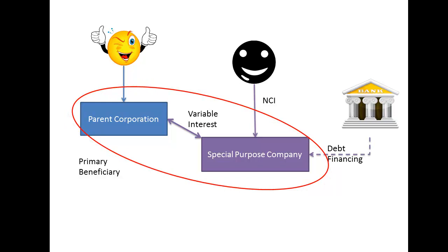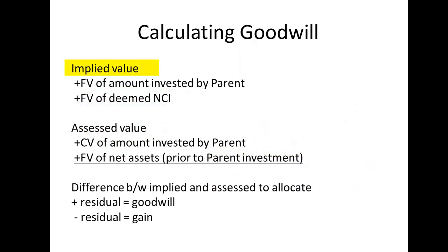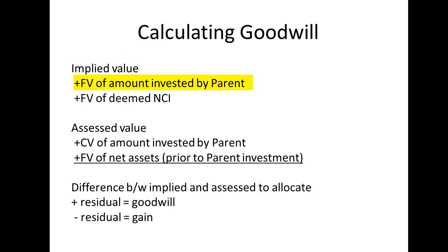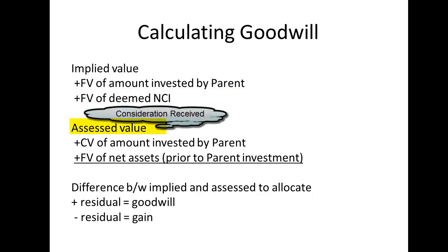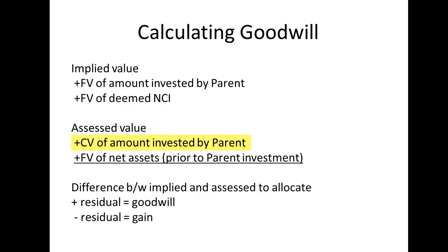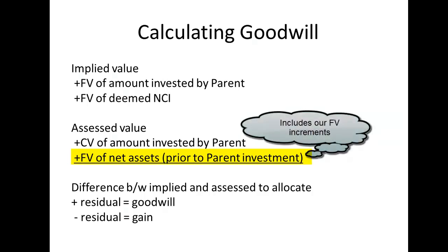However, at the date of initiation, the calculation of the opening balance sheet is somewhat different than what we have learned from typical business combinations. The implied value for 100% of the special purpose corporation is determined as the sum of the consideration paid by the primary beneficiary — in our case, the parent corporation — plus the fair value of the non-controlling interest in the variable interest entity, which in our case is the value of the common shares in the special purpose company. We compare this implied value with the value of the consideration received by the special purpose company, called the assessed value, which is the sum of the carrying value of the amount invested by the primary beneficiary or parent corporation, plus the fair value of the variable interest entity's own net assets, excluding goodwill prior to the investment by the primary beneficiary. Note that fair value increments are inherent in this line — for instance, any differences between book value and fair value of capital assets, intangibles, and long-term debt.